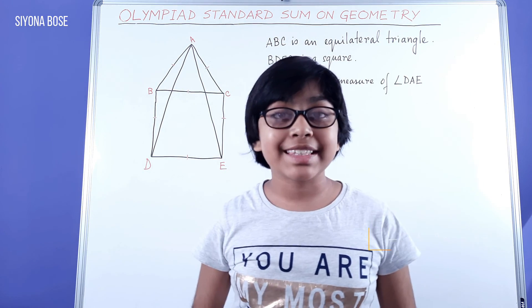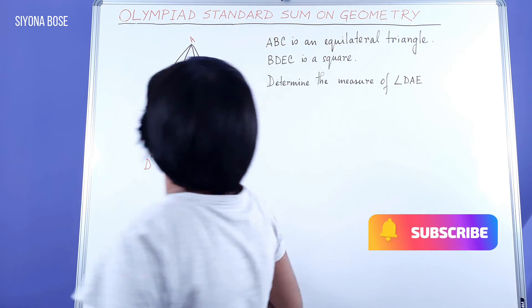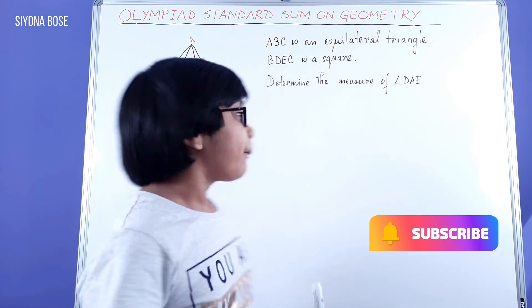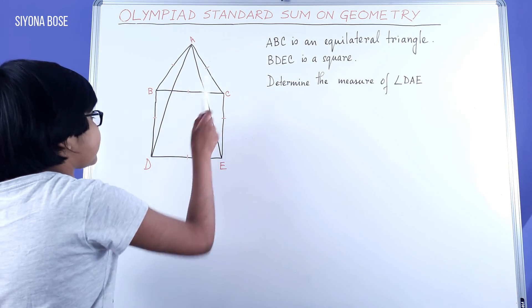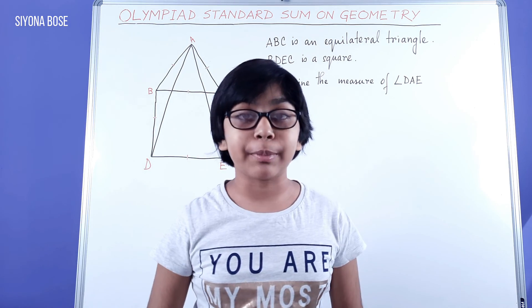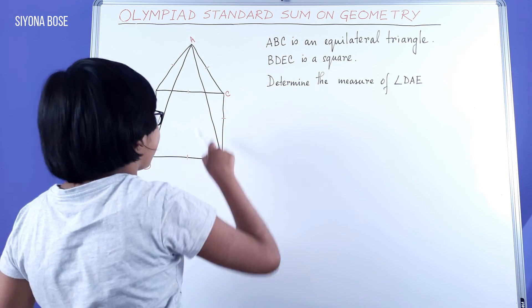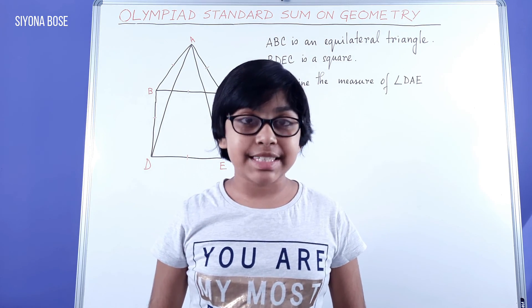Here we can see a diagram of an equilateral triangle ABC and a square BDEC. We have to determine the measure of angle DAE. So, how will we do this?